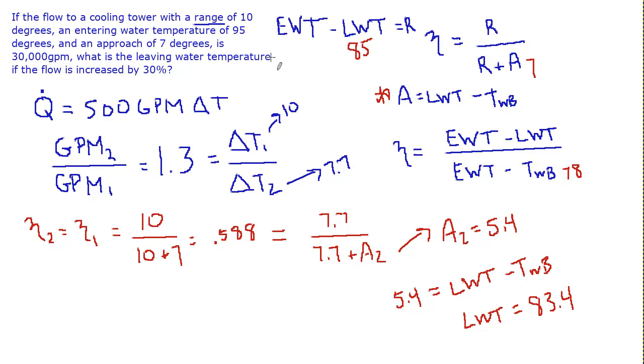So let's think about this. The range went from 10 to 7.7, which makes sense, because we're moving more volume flow. We're going to get less delta T, smaller range. Fine.